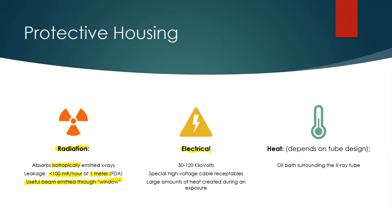The protective housing is not just there to limit radiation — it also protects us from electrocution by the electrical components. We're dealing with anywhere from approximately 50 to 120 kilovolts. To put that into perspective, regular wall sockets run at 110 volts, and large equipment plugs run at only 220 volts. We're dealing with 50 to 120 thousand volts when creating x-rays. For this reason, there are high voltage cable receptacles that plug into the protective housing, essentially eliminating the possibility of electrocution under normal use.